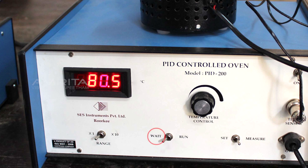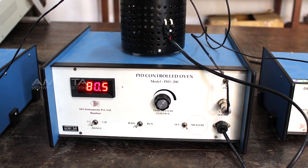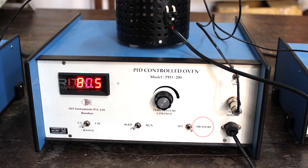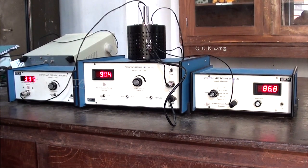Weight button is used to stop heating at a particular temperature and measure button displays the present temperature in the oven. The resistivity of the sample can be calculated at the temperature of the oven.